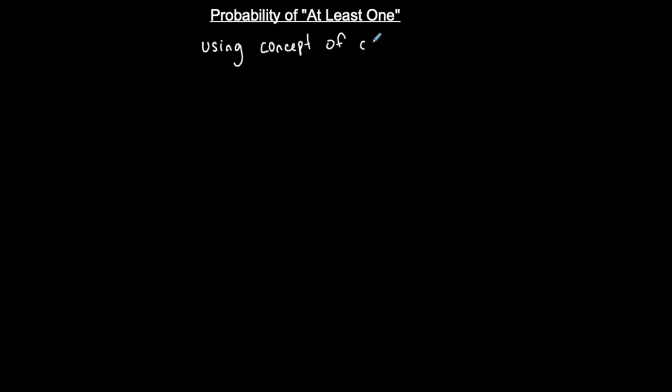This is going to be a fun topic. What is very important about understanding the probability of 'at least one' — or how to calculate it — is that you really need to have a good understanding of complements. We're doing this by using the concept of complements, and it's very important that you understand what that is. If you don't, you need to go back to my other video to understand what a complementary event is.